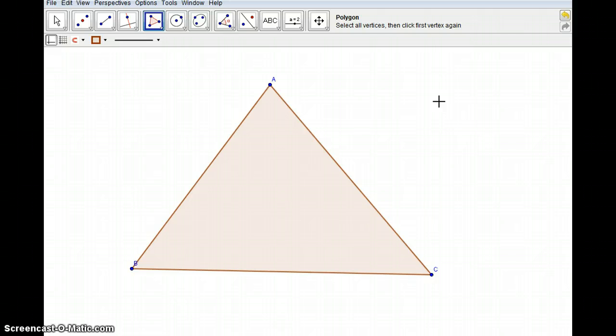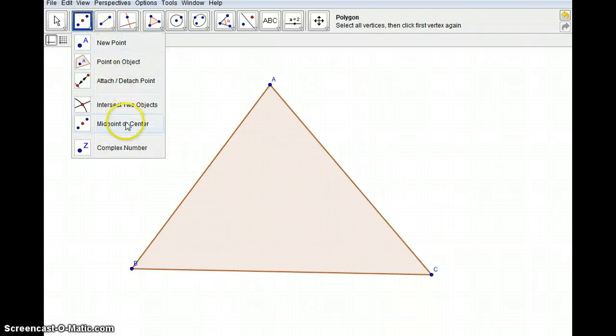Now think back when we first started talking about medians, and we learned that medians were segments that connected a vertex to the opposite side's midpoint. So we need to construct the midpoint of each of the sides of the triangle.